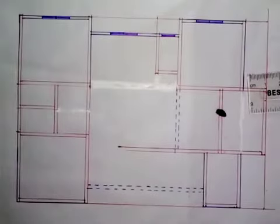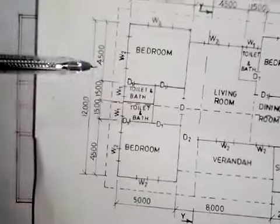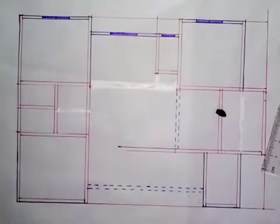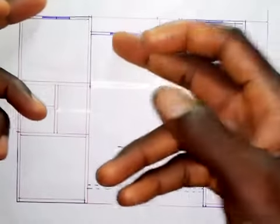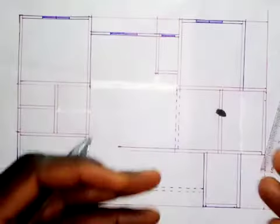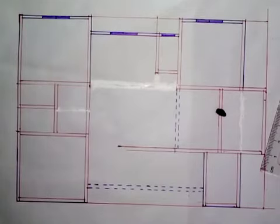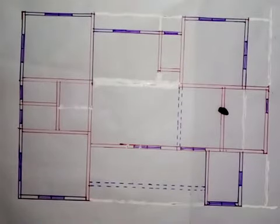Moving on, here we have W2, W1, W1, and W2. The same process we did for the earlier windows applies to all remaining windows. I'm going to pause the video, fix all the windows, and come back to show you the end result. Looking at what we have now, all the windows have been fixed in their respective places using the same method.